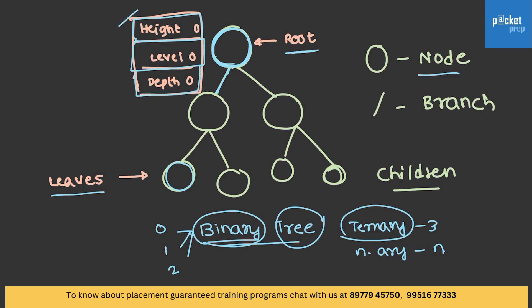We don't have a precise definition for height, level, and depth. Some people term it as zeroth level, some people call it first level. Whenever a problem is given, it will be specified clearly whether the root is at zeroth level or first level. The same happens with height and depth as well. Except leaves and root, all the other nodes are called internal nodes.